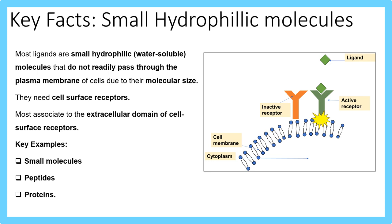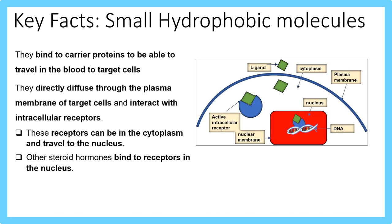In this image you can see an inactive receptor becoming an active receptor because the ligand has bound and that initiates energy release. Small hydrophilic molecules are able to bind to carrier proteins, and this helps them reach target cells. They also directly diffuse through the plasma membrane to target cells and interact with intracellular receptors.